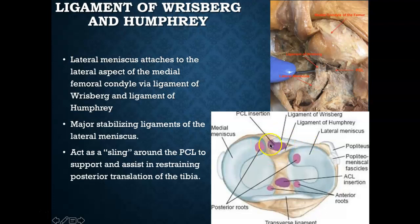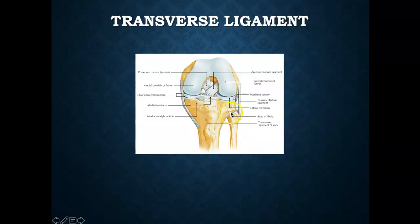The transverse ligament connects the lateral and medial menisci anteriorly. Its major role is to attach the lateral meniscus to the medial meniscus. If injured, the two menisci can move independently, which would be detrimental to knee stability.